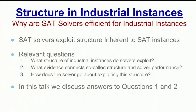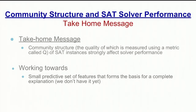Part of my research is to answer the question of why SAT solvers are efficient for solving industrial instances. We know that SAT solvers exploit some kind of hidden structure, but we don't know what it is. This has led to three questions: What is the structure of an industrial instance that the solvers exploit? What evidence connects the structure to the performance? And how do the solvers go about exploiting the structure? This talk will focus on answers to questions one and two. The take-home message is that the community structure of a SAT instance strongly affects solver performance. The community structure is a metric we call Q, which defines how easily a graph can be separated into clusters. We're currently working towards a small predictive set of features that forms the basis for a complete explanation.